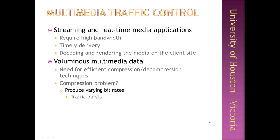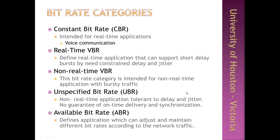Applications requiring streaming and real-time distribution of media typically require large network bandwidths as well as timely delivery, decoding, and rendering of media data on the client side. Multimedia data is huge and requires compression techniques to reduce the amount of data to distribute. Compression mechanisms usually produce varying bit rates that result in traffic bursts during distribution. For multimedia traffic, several bit rate categories are generally considered.